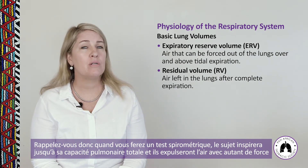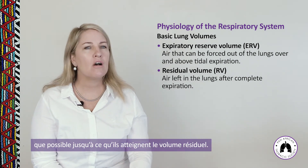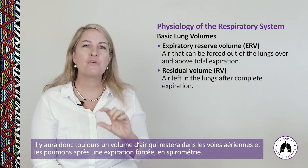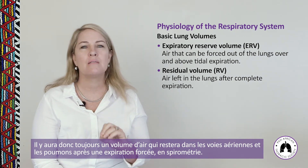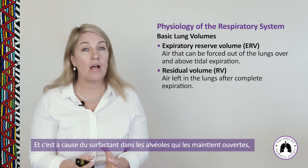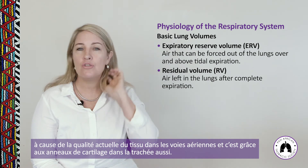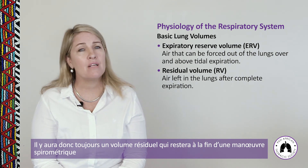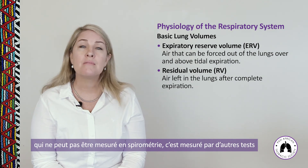When performing a spirometry test, the patient breathes in to total lung capacity, then blasts the air out as fast and hard as possible down to residual volume. There will always be an amount of air remaining in the airways and lungs at the end of a forced expiration, due to surfactant in the alveoli keeping them open, the quality of the airway tissue, and the cartilaginous rings in the trachea. This residual volume cannot be measured on spirometry but is measured by other tests.